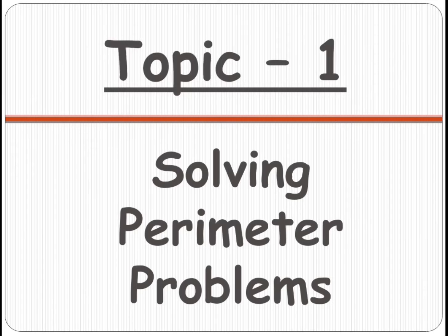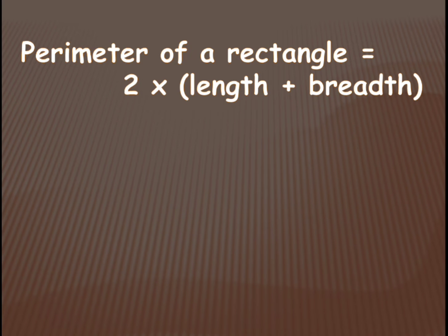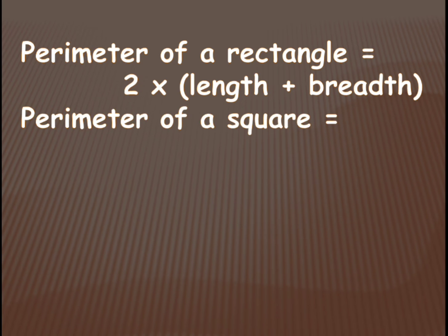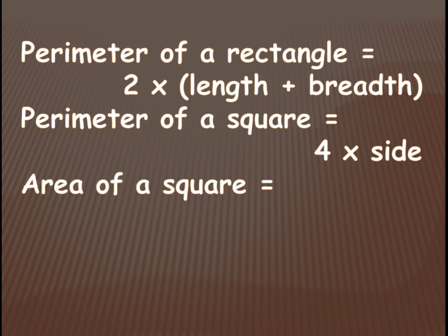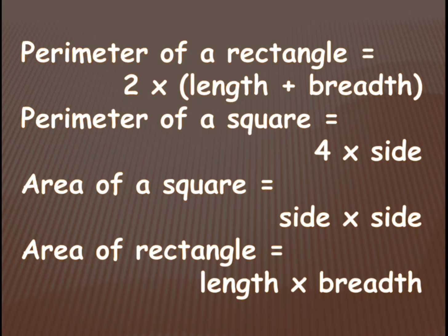Before starting again, let's recollect the formulas. Perimeter of a rectangle is equal to 2 into length plus breadth. Perimeter of a square is equal to 4 into side. Area of a square is equal to side into side, and area of a rectangle is equal to length into breadth. We have to learn these formulas to apply them in the problems.